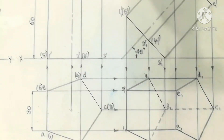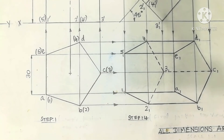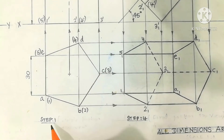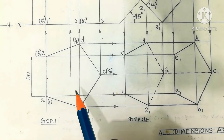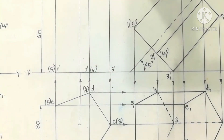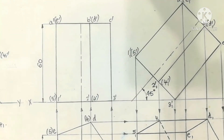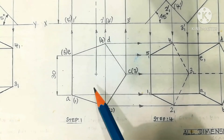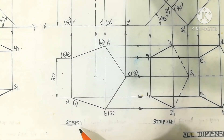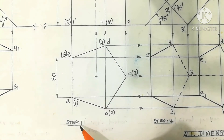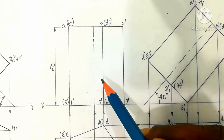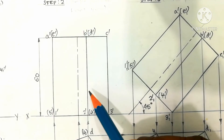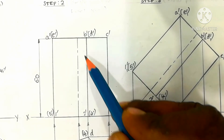So in these four diagrams, this is the first diagram, called the Step 1 diagram, drawn like this. The corresponding front view and corresponding top view diagram is shown here, called the Step 1 diagram. Then the corresponding simple position front view — this is the second diagram.